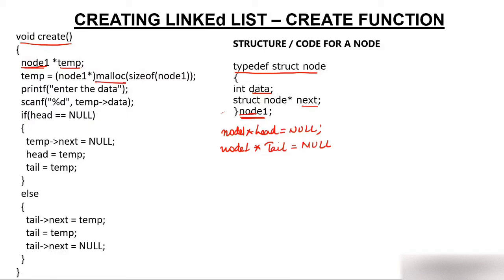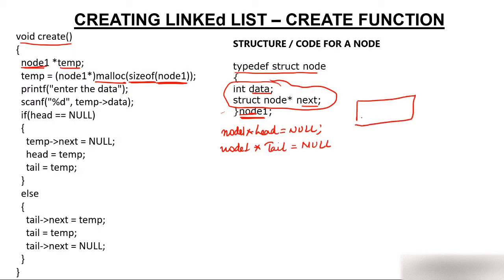Malloc is a dynamic memory allocation function that creates memory. It creates memory of size 'sizeof(node1)', where node1 is the structure having two parts: data and address. The moment you write this line, a node gets created with those two parts. We type-cast the return to node1 pointer type. Malloc creates the memory and returns the address, so temp — which is a pointer — keeps the address of this node. Suppose the address of this node is 100, so the value of temp will be 100.